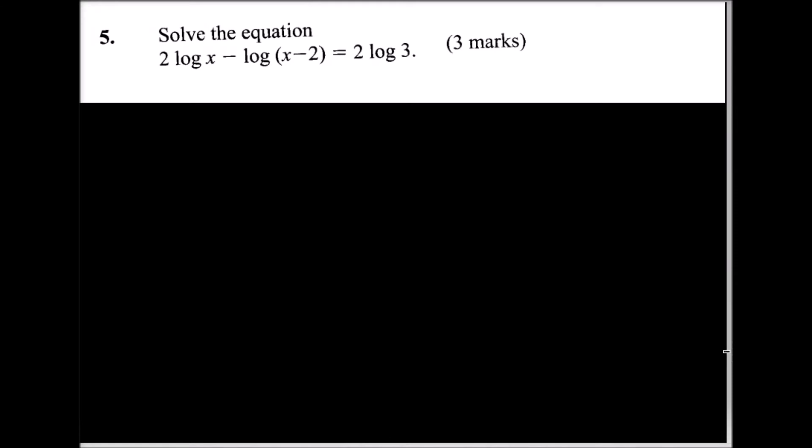We apply the first law of logarithms and write our logarithm like this: we take 2 to be the power, giving us log x² minus log(x - 2) equals log 3², where we apply the same rule on the right side.